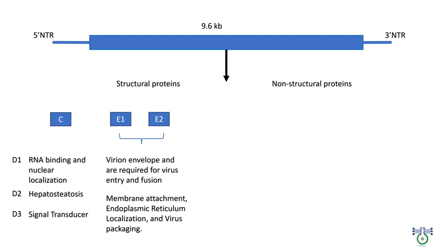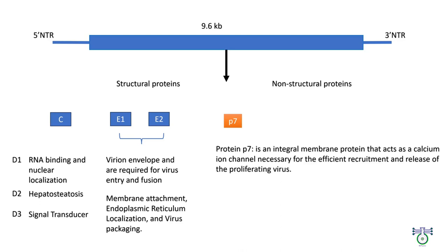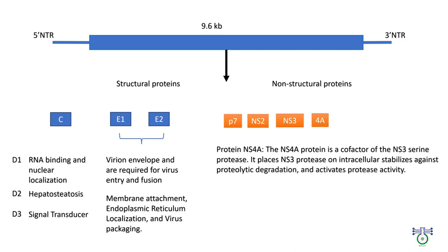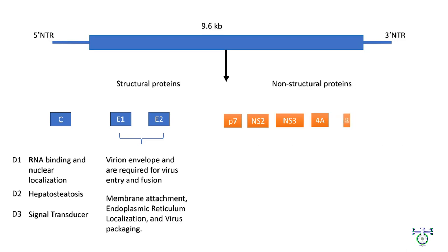Now let's come to non-structural proteins, which are very important. First comes protein P7, which is an integral membrane protein that acts as a calcium ion channel necessary for efficient recruitment and release of proliferating virus. Protein NS2 plays a role in virion packaging. Protein NS3, a serine protease, is responsible for the virus to escape from the natural cellular antiviral defense mechanism. Protein NS4A is a cofactor of NS3 serine protease. It places NS3 protease on intracellular stabilization against proteolytic degradation and activates protease activity. Protein NS4B has the ability to induce the formation of specialized membrane folds, also called membranous webs, that serve as a scaffold for the HCV replication complex.